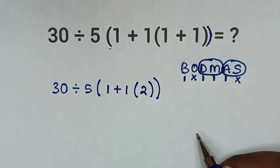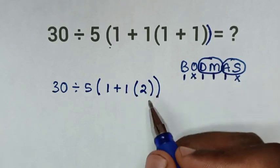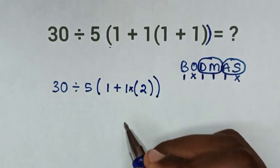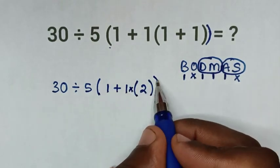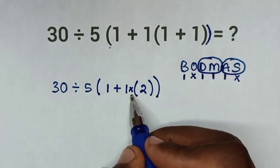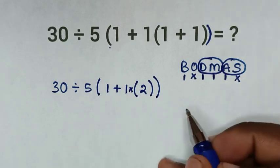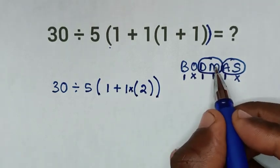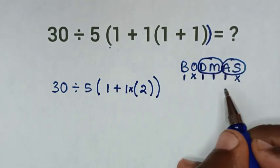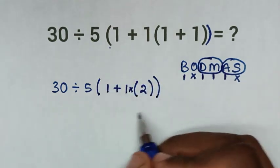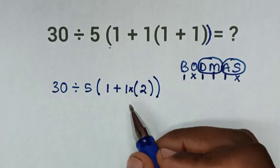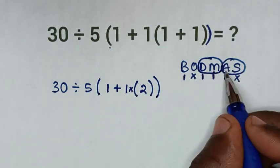In the next step, after we have dealt with this inner bracket, we have multiplication here. We'll deal with this outer bracket. Inside this outer bracket we have addition and multiplication. According to our rule, we'll start with the group of division and multiplication, then the group of addition and subtraction. From this outer bracket, we have only multiplication, so we'll deal with multiplication first.